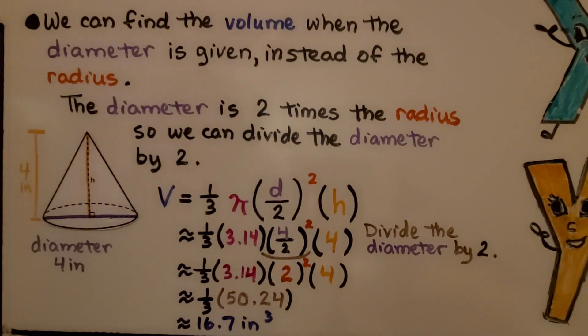We can find the volume when the diameter is given instead of the radius. The diameter is 2 times the radius, so we can divide the diameter by 2. If it's telling us the diameter is 4, well then we know the radius is 2.